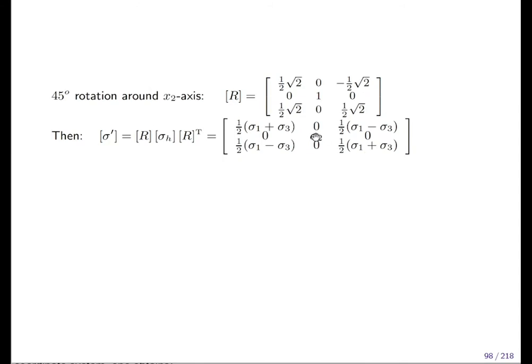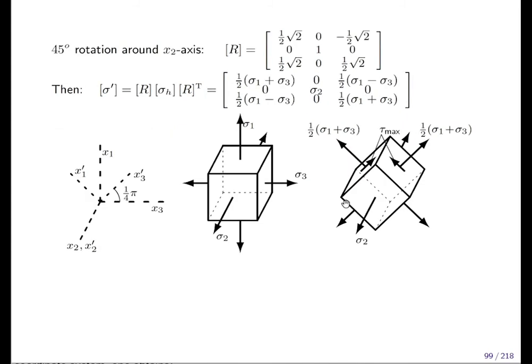Sigma two is unchanged because we rotate around the two direction, and sigma one minus sigma three half on the diagonal. So the new stress is symmetric, the transformation matrix is anti-symmetric plus and minus. This is how it looks when we ask you to rotate your stress cube.